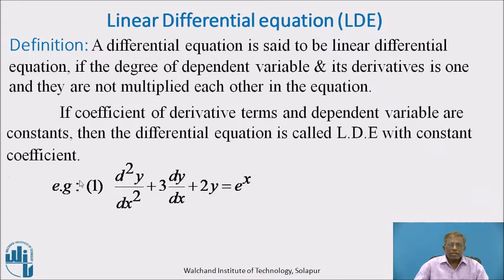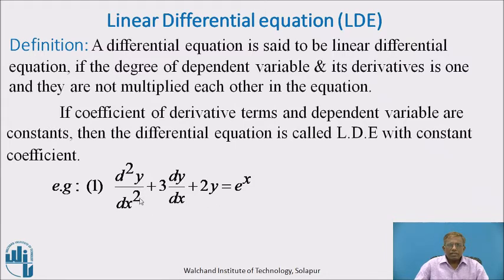Let us consider example 1: the differential equation d²y/dx² plus 3(dy/dx) plus 2y equals e raised to x. In this differential equation, y is the dependent and x is the independent variable. The degree of y and its derivatives dy/dx and d²y/dx² is 1, and they are not multiplied by each other. So this differential equation belongs to linear differential equations. Also, the coefficients of the derivative terms and the coefficient of dependent variable y are constant. Hence, this is also called a linear differential equation with constant coefficients.